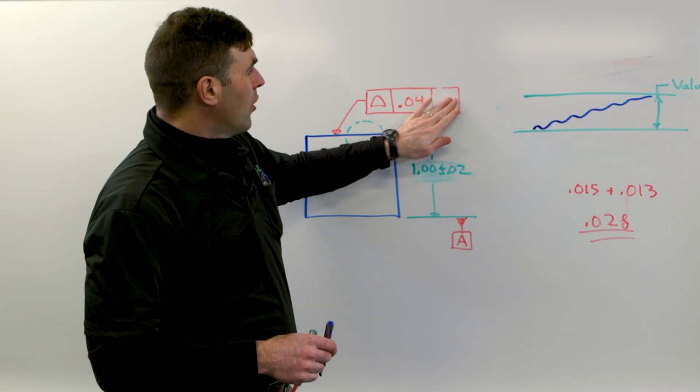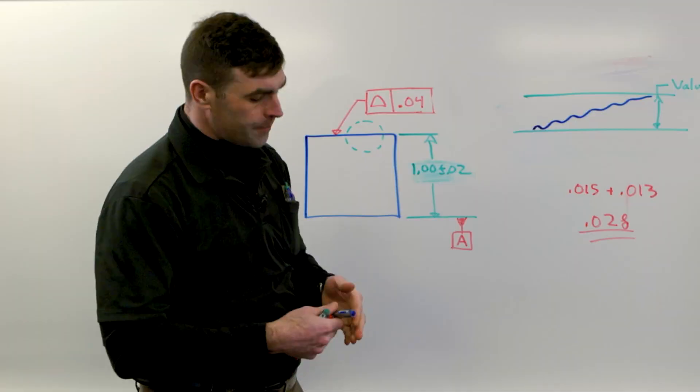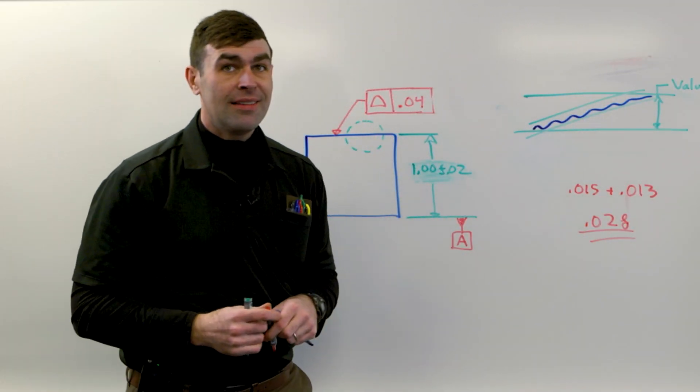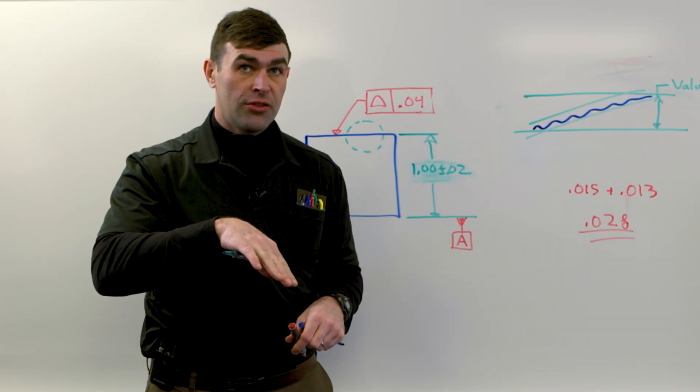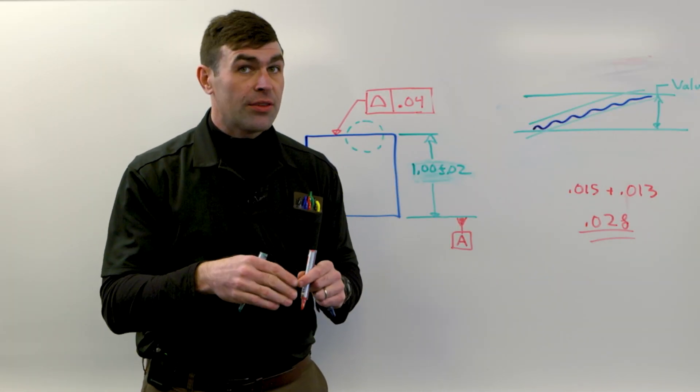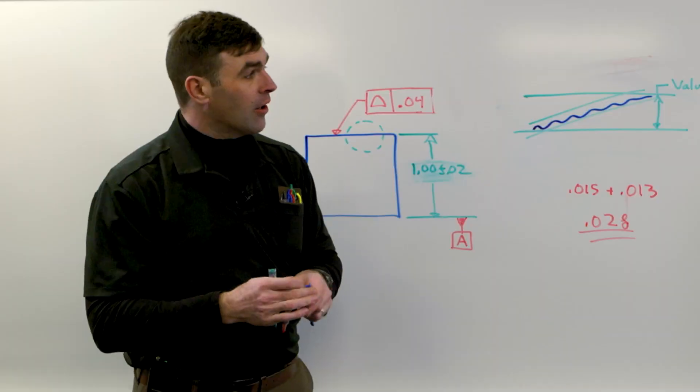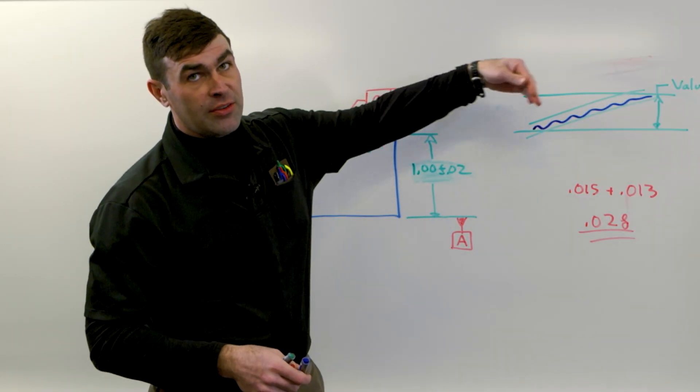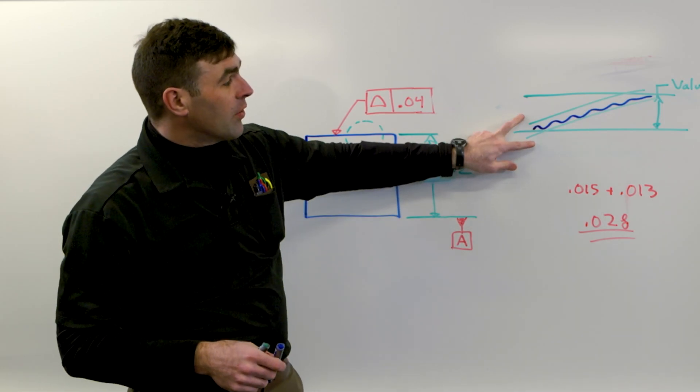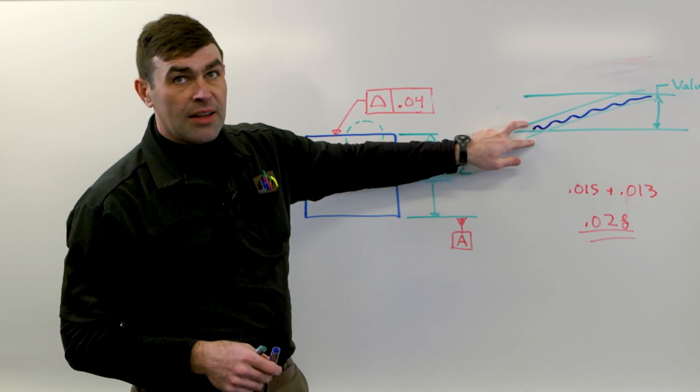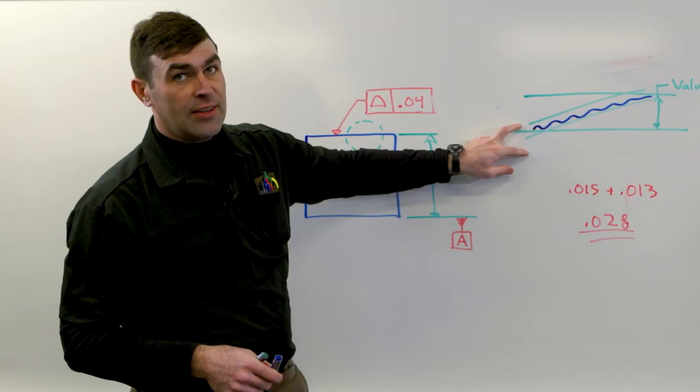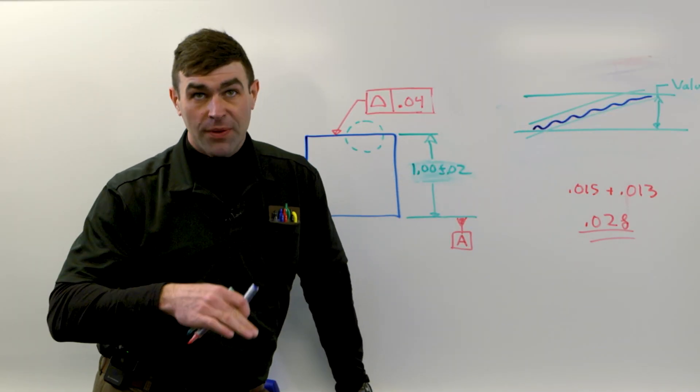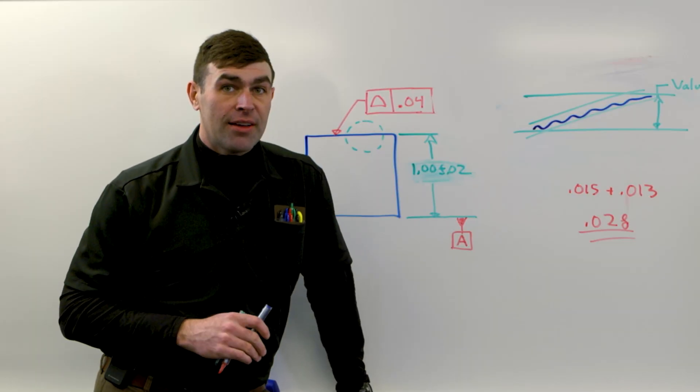If there's no datum reference at all, our tolerance zone for the profile is now free to rotate just like a flatness, right? This is more difficult with the indicator because now I've got to present this surface to the indicator in such a way that it's easy to measure. But our tolerance zone is free to rotate. It'll collapse. It's just the distance between the high points of the actual surface. So in that way, it acts just like flatness.